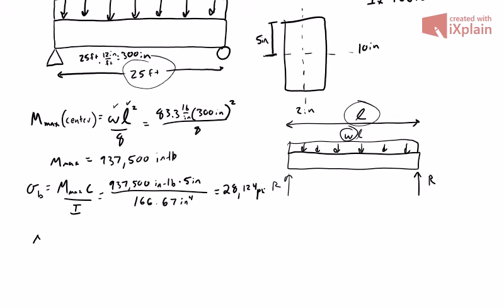The last one we need is the deflection, which uses the symbol capital delta. Looking back at figure one, it tells us delta max at the center equals 5wL to the fourth over 384 times E times I. We have all those things. We can plug in: w is 83.3 pounds per inch, L is 300 inches to the fourth power.